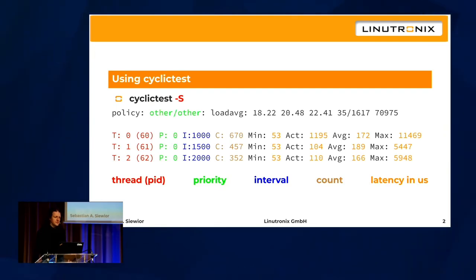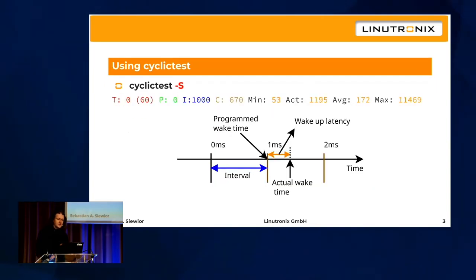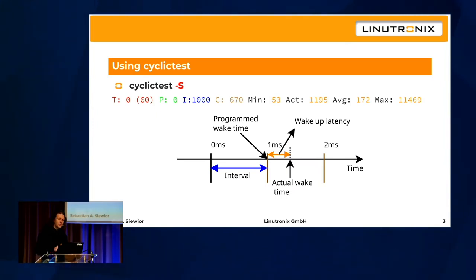For RT, we use mostly cyclictest, among other tools, to test the system. What cyclictest does is measure the wake-up latency. It programs a wake-up every interval — in this case 1000 microseconds — then goes to sleep. When the actual wake-up happens, it measures the delay between the programmed wake-up and the actual wake-up time. Those are the orange numbers: minimum, average, and maximum.